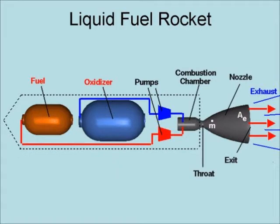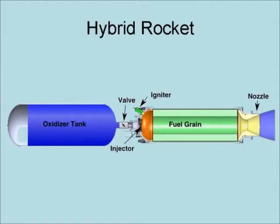Liquid fuel rockets are rockets in which the fuel and oxidizer are stored in liquid form in separate tanks and then combined and ignited in a combustion chamber. They are easily controlled by varying the propellant flow and are the most efficient form of a chemical rocket.